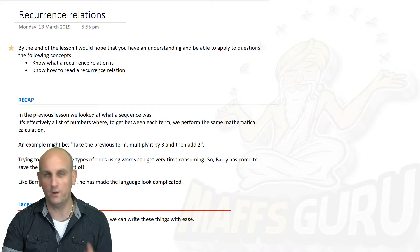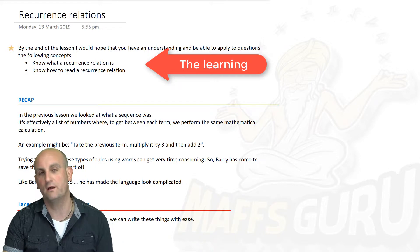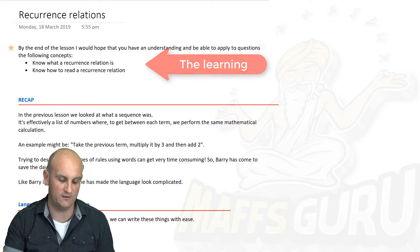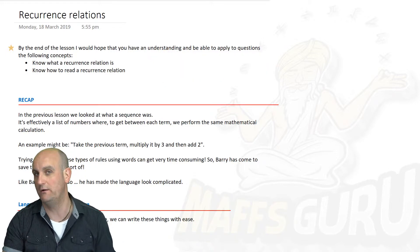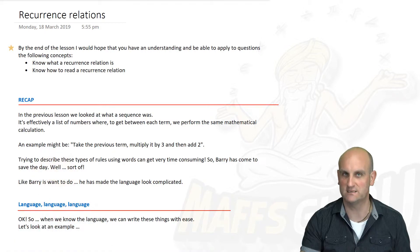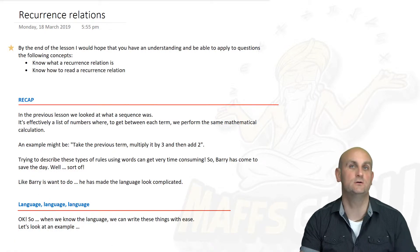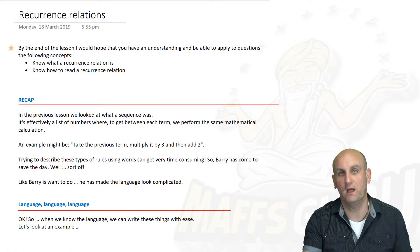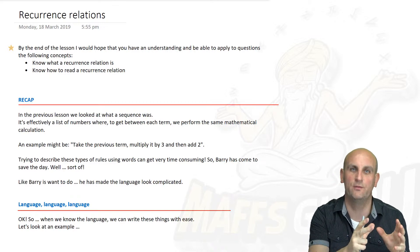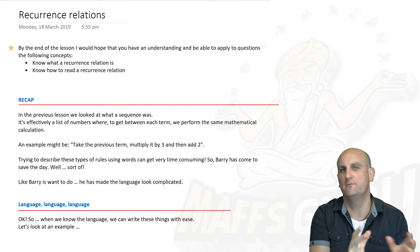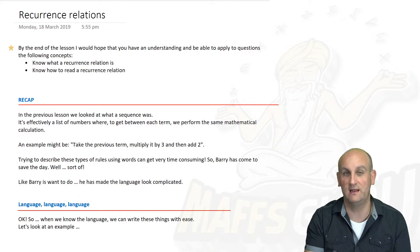Before we get into it, what's the lesson going to actually all be about? We're going to know what a recurrence relationship is and know how to read said recurrent relationships. Basically, long story short, as a sort of a spoiler, it's about a way of writing the words to go from a term to term sequence in some sort of a formula-y typey thing.